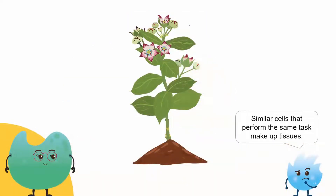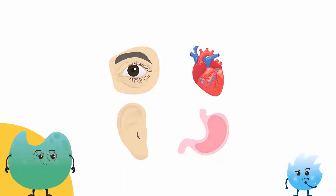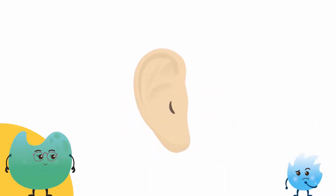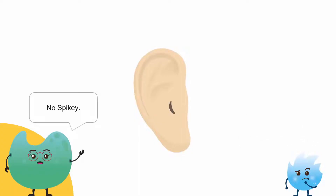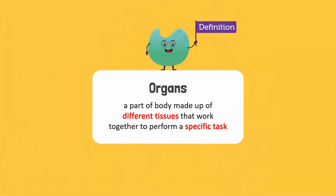So, similar cells that perform the same tasks combine to make up tissues. Does that mean our ears, eyes, heart, and stomach are also tissues? For instance, ears perform the function of hearing. Our ears, eyes, or heart are not tissues — they are organs. An organ is a part of a body which is made up of different tissues that work together to perform a specific task.